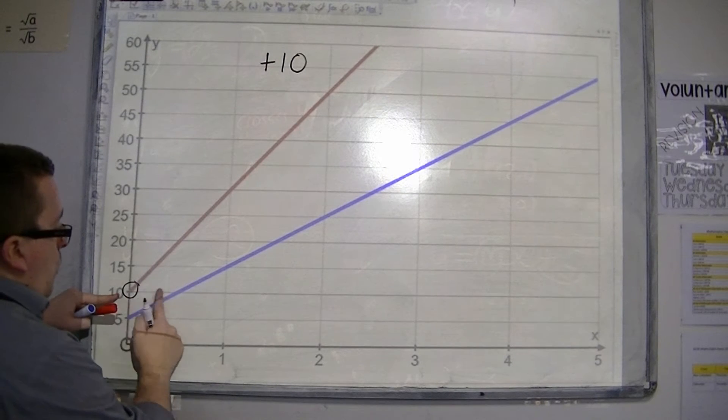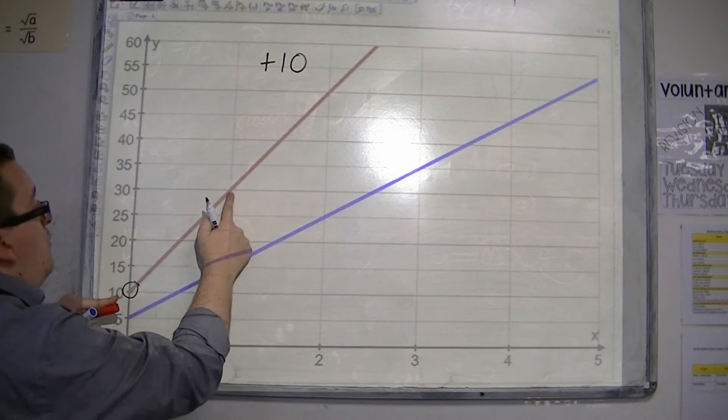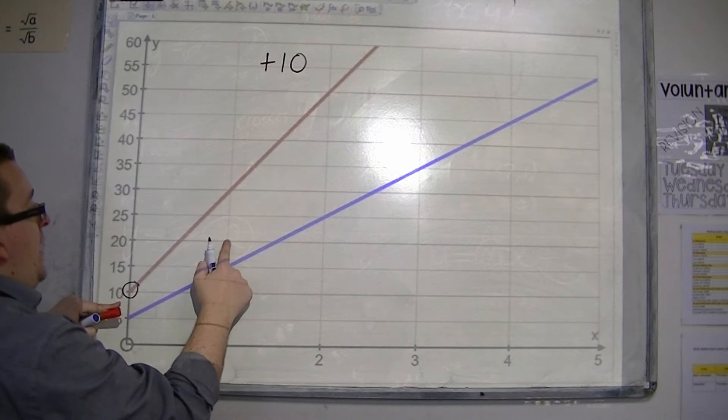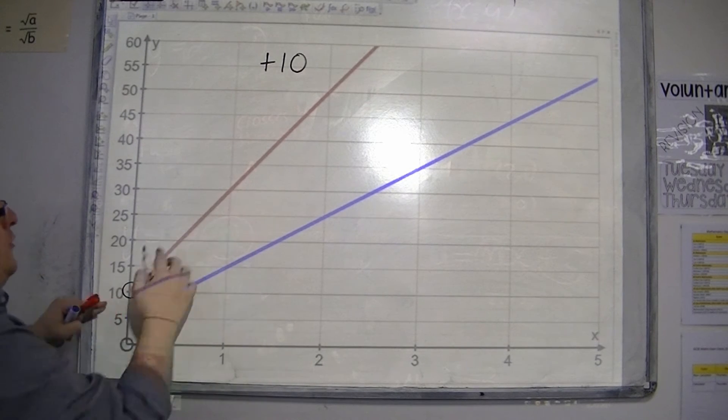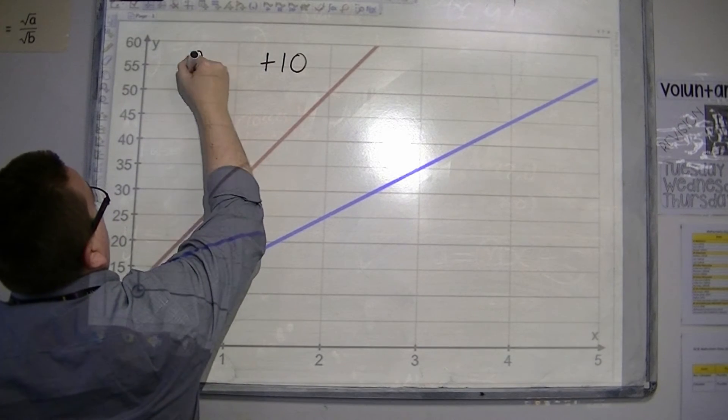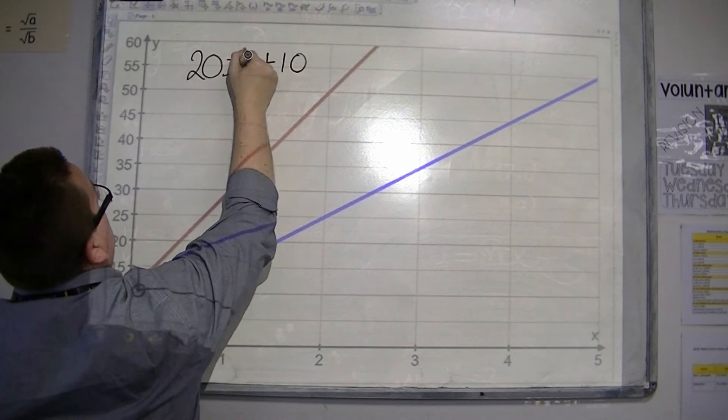So for every one along, I'm going up how much? So one along, and I'm going up 5, 10, 15, 20. So I'm going 20 up every one. So 20 must be in front of the x.